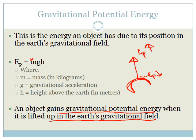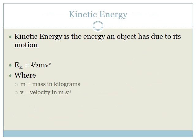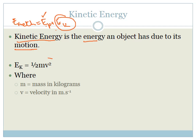The higher we go, the more the potential energy. Now, E_mech equals EP plus EK. EP is gravitational potential energy. Now let's talk about EK — kinetic energy. This is the energy an object has due to its motion. EK equals one-half MV squared, where M is mass in kilograms and V is velocity in meters per second. It's very important that you get your units right.